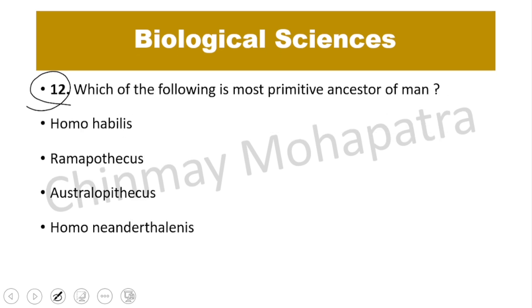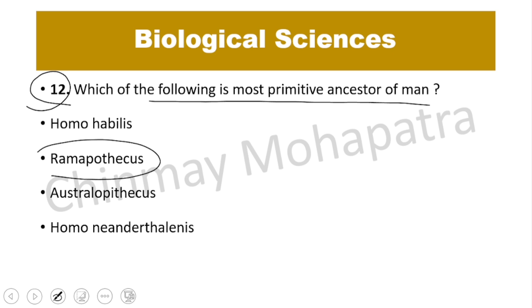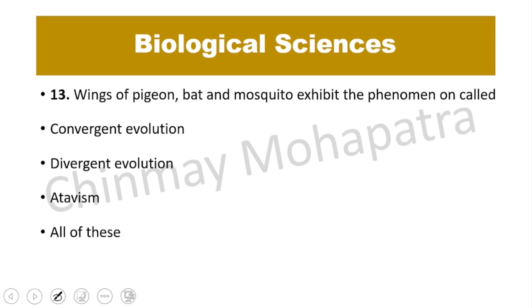Question number 12. Which ancestor of man is the most primitive? The right answer is Ramapithecus — the most primitive ancestor of man.